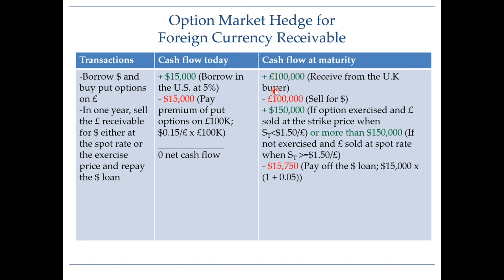After one year, you will receive your one hundred thousand pound payment from the UK buyer — remember, this is for your sale of soybeans. Once you have received your one hundred thousand pounds, you will sell them, but whether at the spot rate or by exercising your option depends on the future spot rate. If the future spot rate is lower than $1.50, you will exercise your option and sell your pounds at the strike price of $1.50, since you would prefer that over say $1.30 or $1.20.